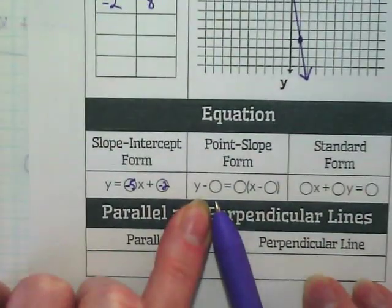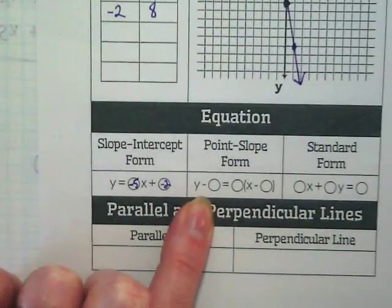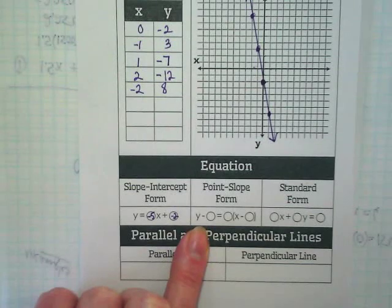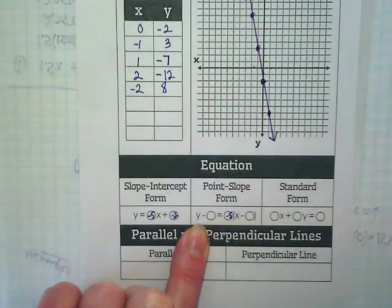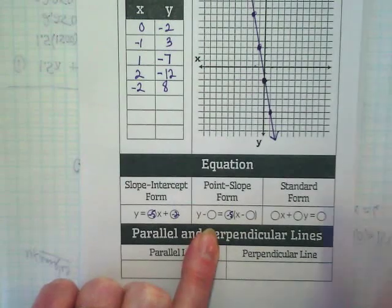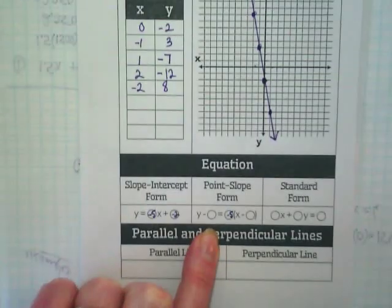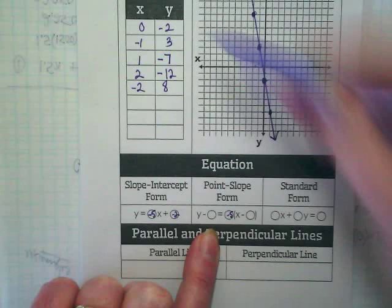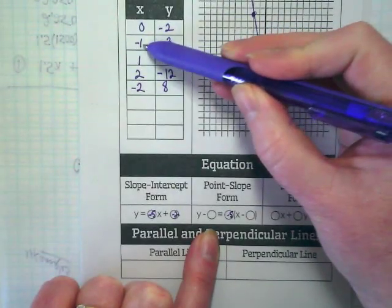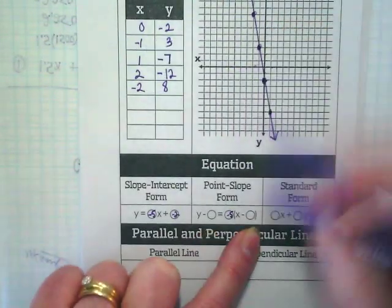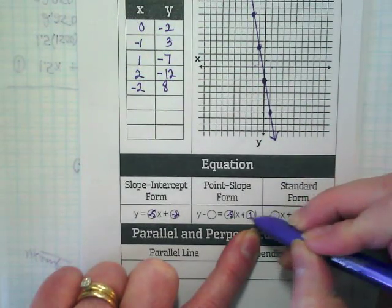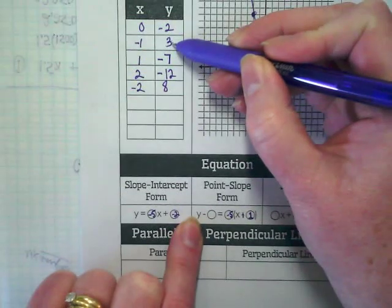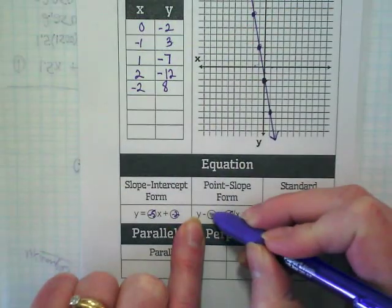Can we fill out point-slope form? Yeah. Do we know what the slope is? Do we have points? If I look at this one, this x is negative 1, so when I put it in here, it's going to become positive 1. And this y is 3, so it's going to stay negative 3.